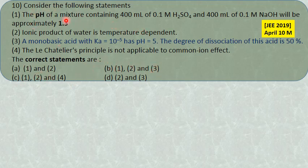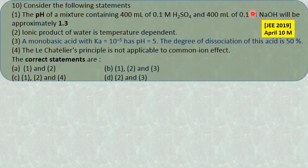For statement 1: H₂SO₄ is dibasic, so equivalents of acid = 2 × 400 × 0.1 = 80 equivalents. NaOH equivalents = 400 × 0.1 = 40 equivalents. Acid is more than base. Using the shortcut formula: H⁺ = (80 minus 40) / (400 + 400) = 40/800 = 0.05 = 5×10⁻². pH = 2 − log 5 = 2 − 0.699 = 1.3. Statement 1 is correct.